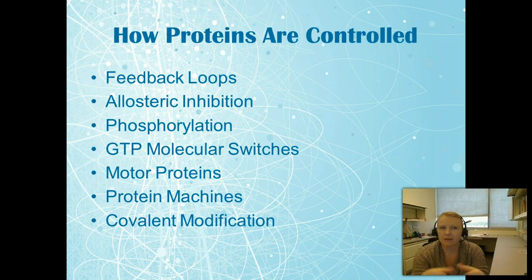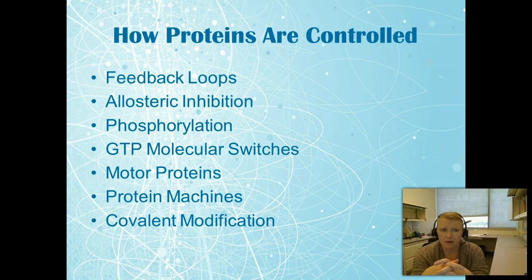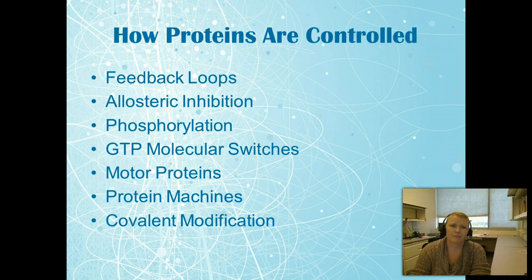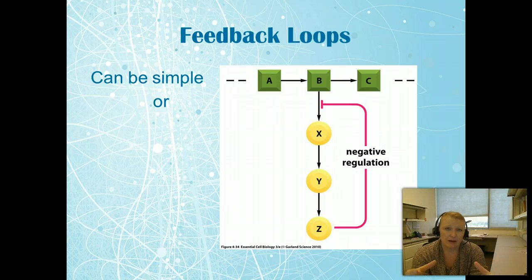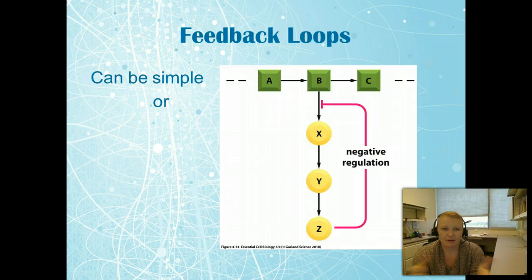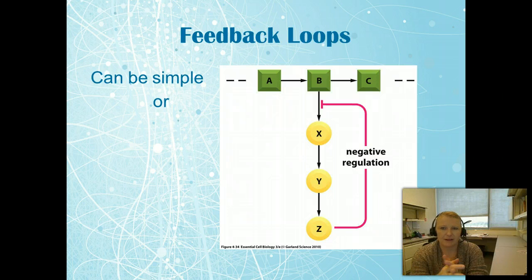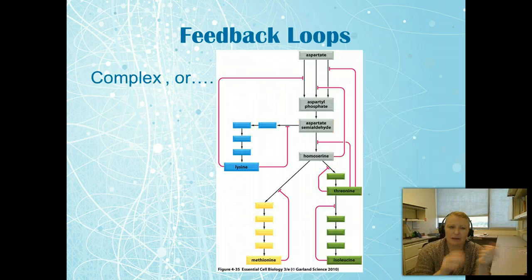Now let's talk about how proteins are controlled. We have many types of controls: feedback loops, allosteric inhibition, phosphorylation, GTP molecular switches, motor proteins, protein machines, and covalent modification. Feedback loops are one of the most common in the cell — for example, B goes to X goes to Y goes to Z, and once Z is made the feedback turns the process off.